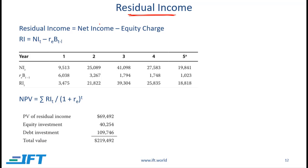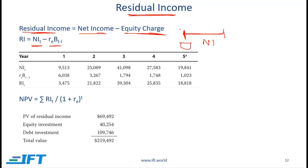Moving on to residual income. Residual income is equal to net income minus an equity charge. For a given period we have a net income, and the equity charge is the book value of equity at the start of the period multiplied by the cost of equity. Net income is what is available to shareholders, but there is an opportunity cost — the required return on equity times the equity investment, which is essentially the book value at the start of the year. This expression gives us the residual income.